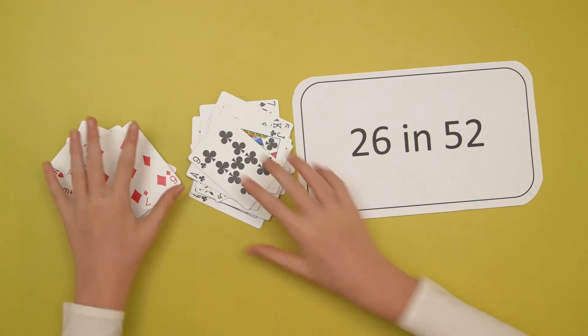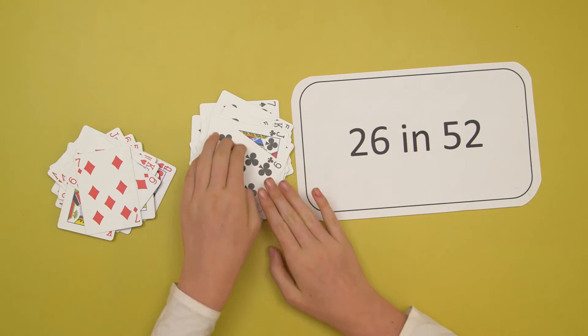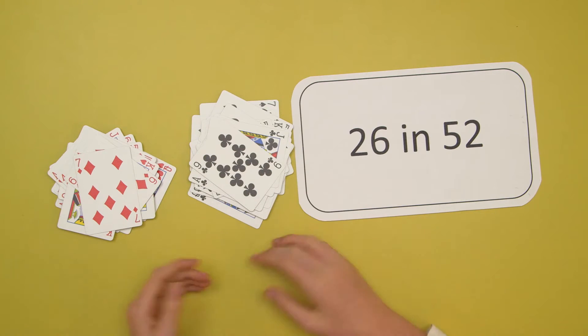So you'd have a 26 in 52 chance of getting, say, a black card. In other words, you'd have a 50% chance of getting a black card.